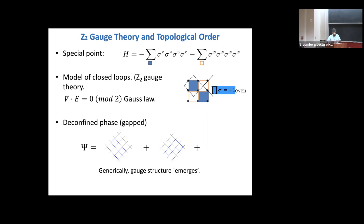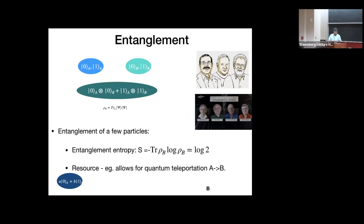There are excitations: if you make a defect where the stabilizer is minus one rather than plus one, you pay some energy cost — those are electric charges, having a one on the right side of the Gauss law. There's another defect which are magnetic fluxes. They have mutual statistics, so you get anyons — particles with non-trivial statistics. There are many different angles from which you can think about this, but the angle I want to emphasize here is entanglement.